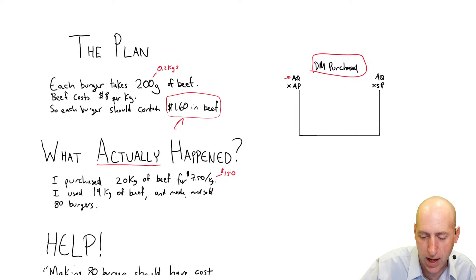AQ, the A stands for actual. So the actual quantity of beef purchased was 20. AP is the actual price paid per unit per kilogram in this case. So the actual price paid per kilogram was $7.50. AQ times AP is just the actual amount you paid for your raw material. So 20 kilograms times $7.50 per kilogram gives us $150 actually spent on the beef.